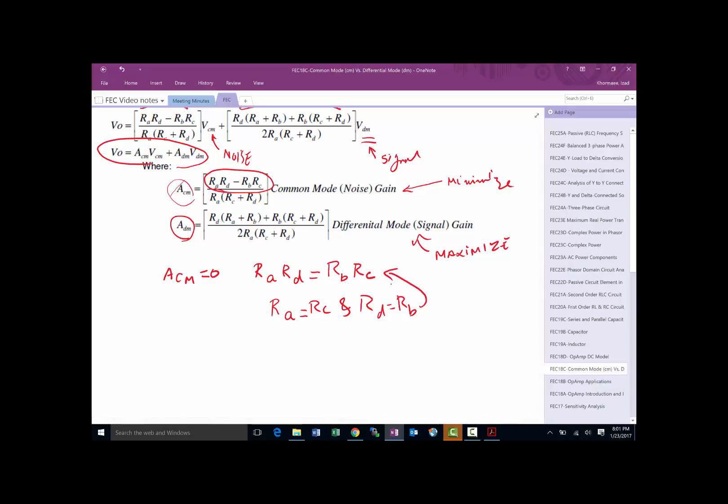If we do that in this ideal situation, the output of this amplifier will result in cleaning up, and we will have basically V out equal to RB over RA times VDM. This would be an ideal case where the output depends only on VDM.